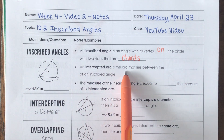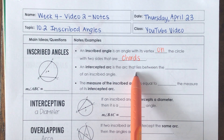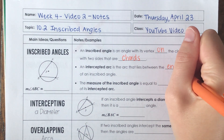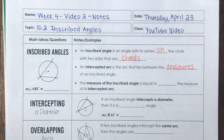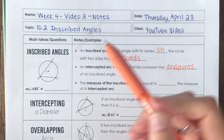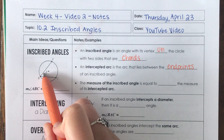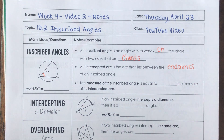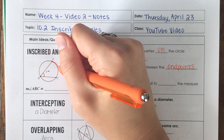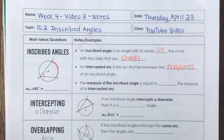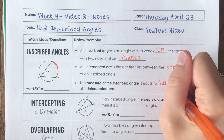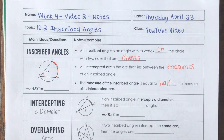An intercepted arc is the arc that lies between the two endpoints of an inscribed angle. So this is the inscribed angle right here — this is the angle. The inscribed arc is this piece A to C right over here. The measure of the inscribed angle is equal to half the measure of the intercepted arc.